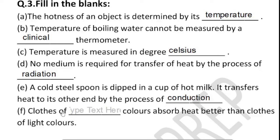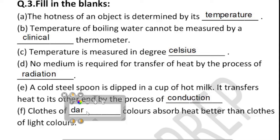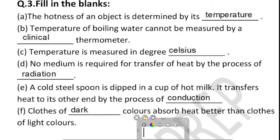Next blank: clothes of dark colors absorb heat better than clothes of light color. Dark-colored clothes absorb more heat, while light-colored clothes reflect heat and absorb less.